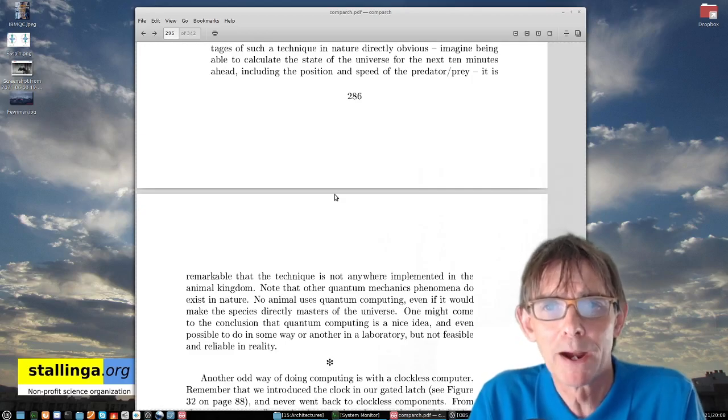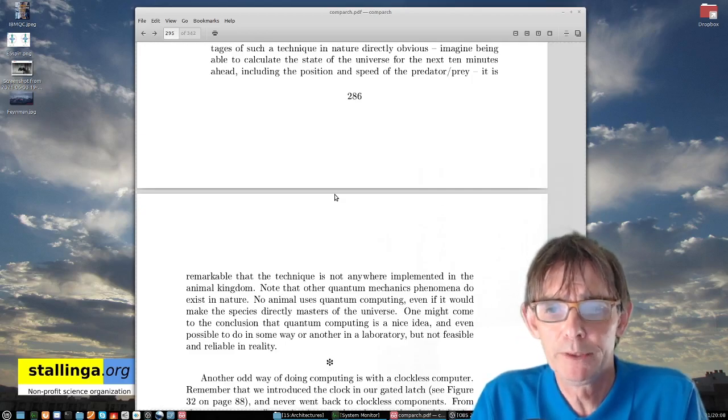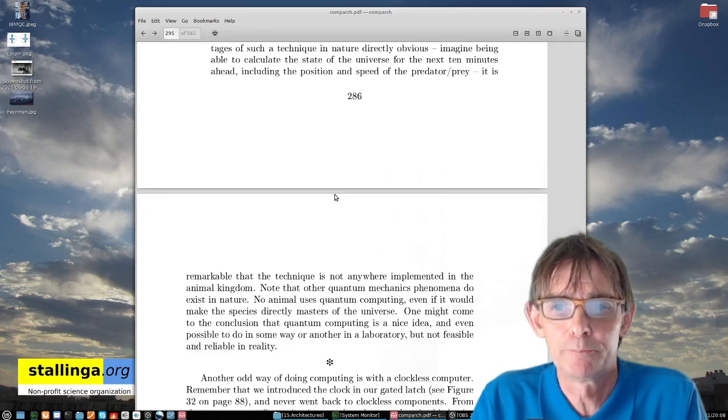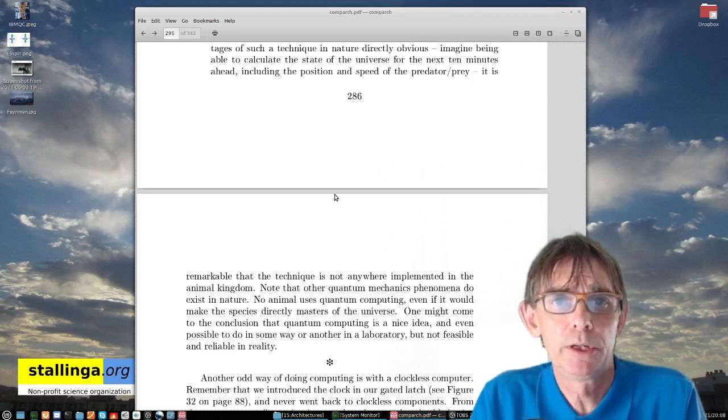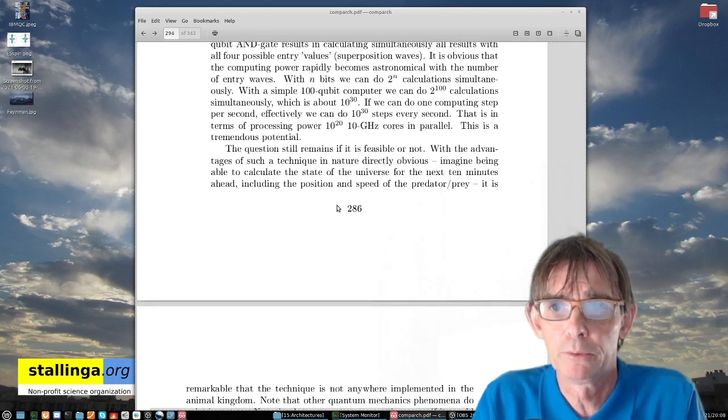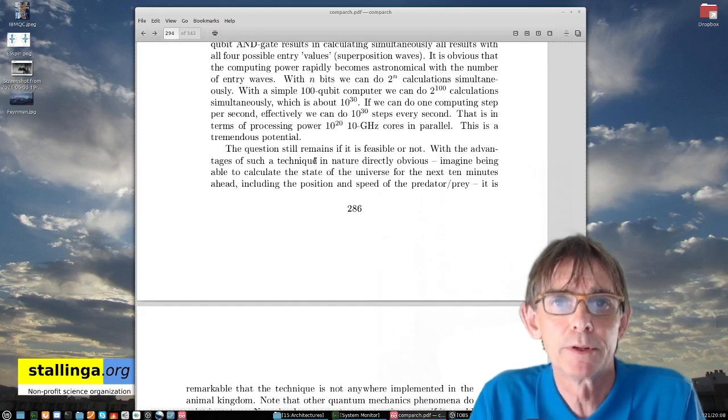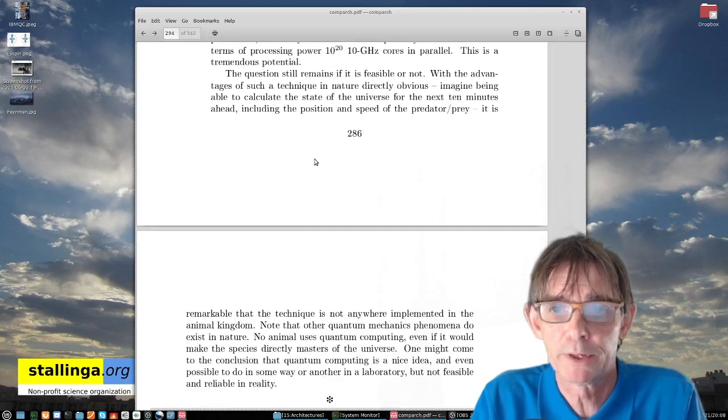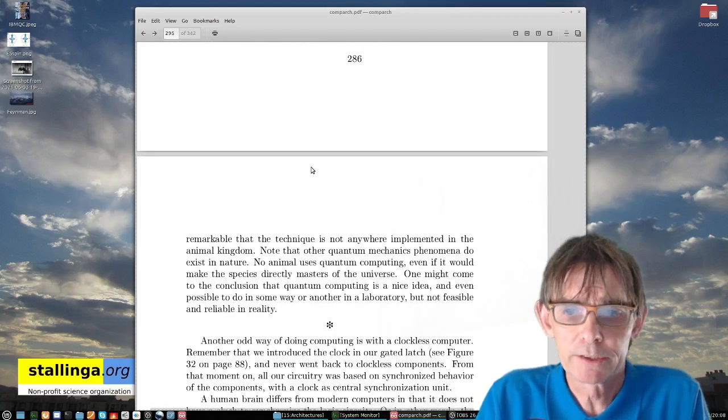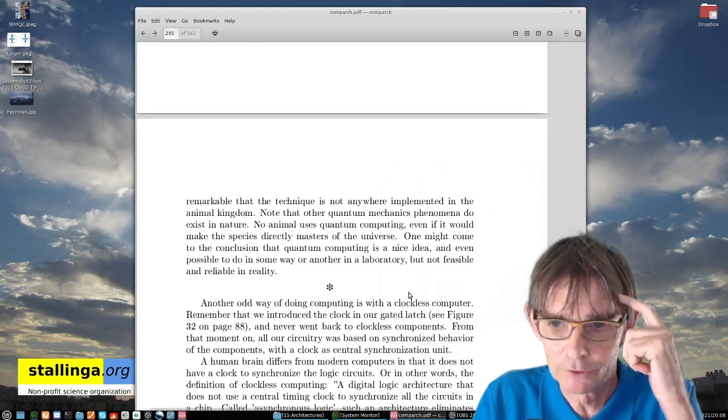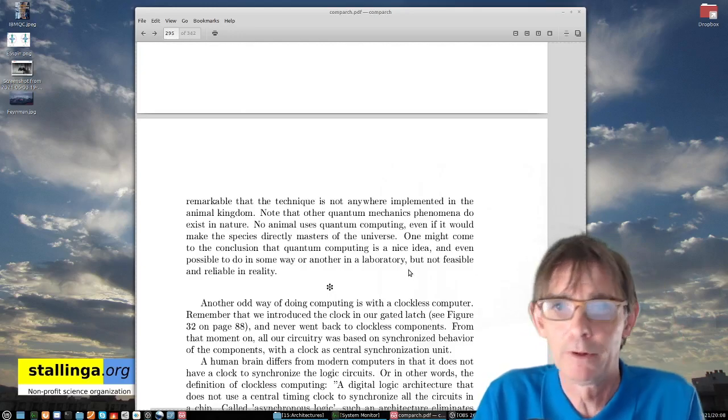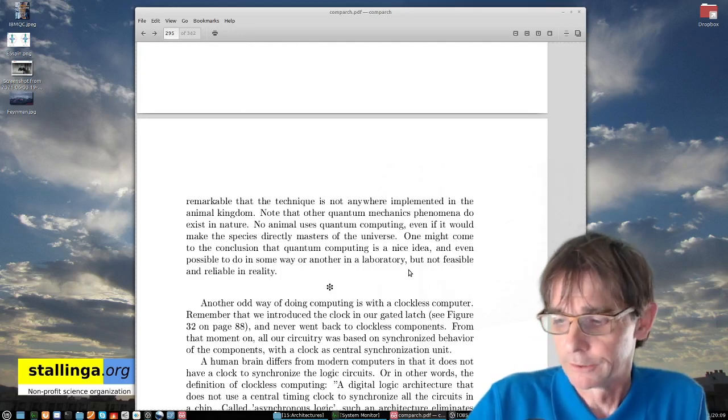So that is quantum computing. It might be that this will then be the end of things like Bitcoin, or blockchain in general, cryptography, because you can instantly calculate all the possible cryptographic possibilities. So decrypting is actually then a piece of cake. So see you in the next lecture where I will talk about a clockless computer. So I will actually talk about your brain, which doesn't have a clock, as you know. See you in the next lecture.